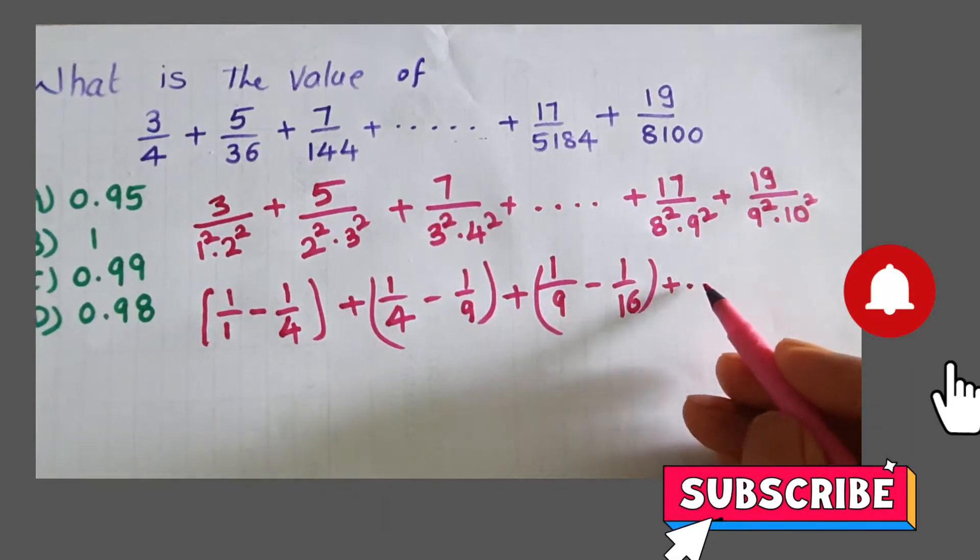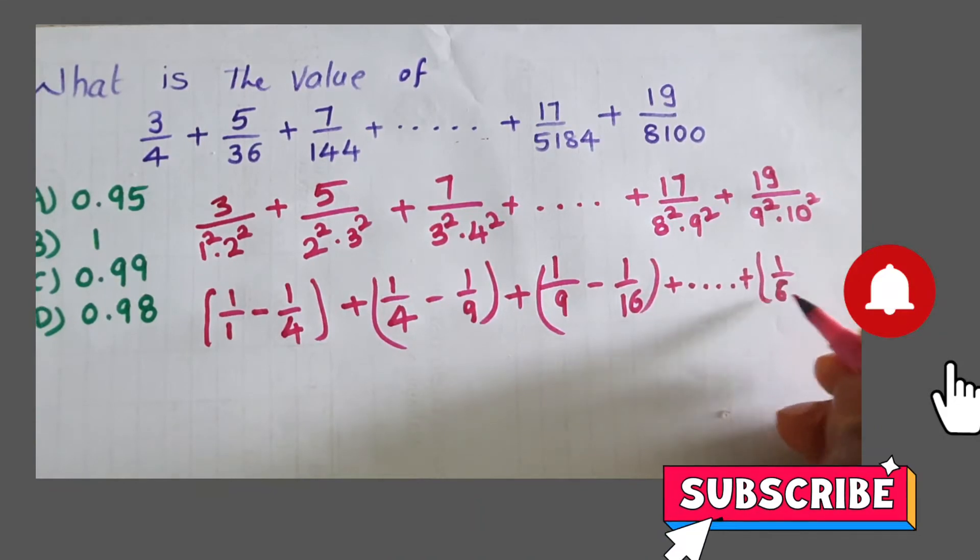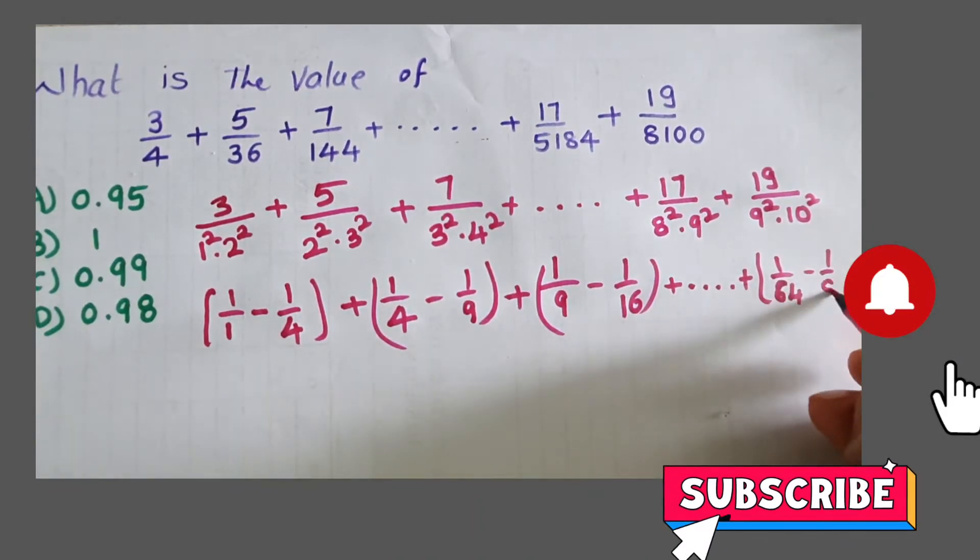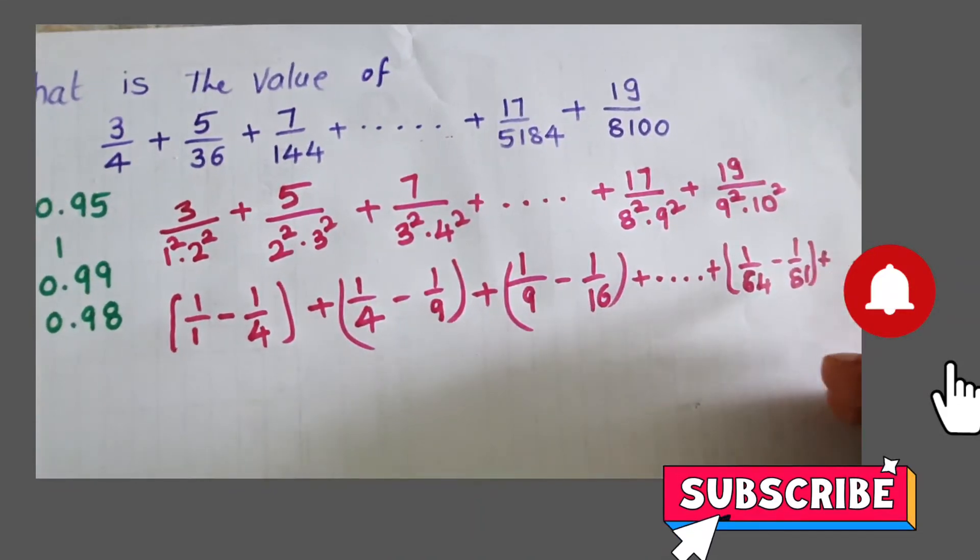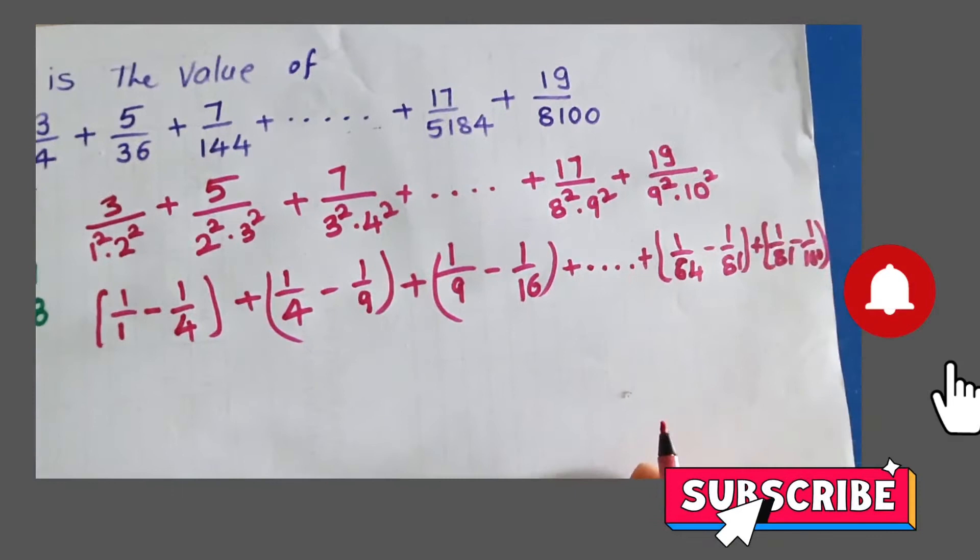The second step: 1 by 64 minus 1 by 81, plus 1 by 81 minus 1 by 100.